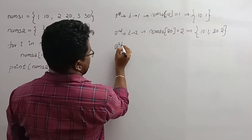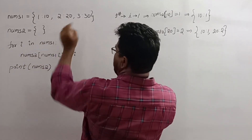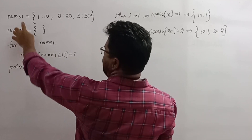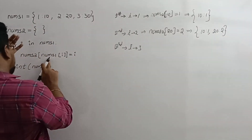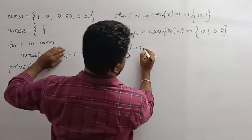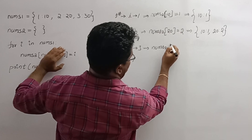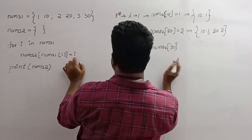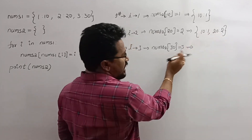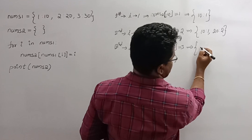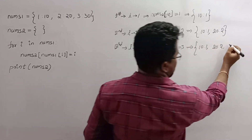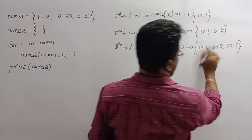Next, the third iteration. The i value is 3. Expression: nums1[i] — nums1 is the dictionary, i is 3. nums1[3] gives the value 30. So nums2[30] equals i, which is 3. In this dictionary, already two pairs are there; this will be added as a new pair at the end of the dictionary: key 30, value 3. This is the end of the third iteration.